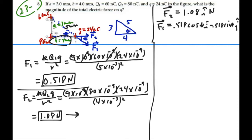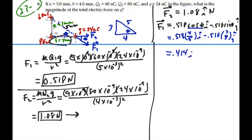The theta we're looking for is right there. So this is going to be 0.518 — cosθ will be 4/5 (adjacent over hypotenuse) — and 0.518·sinθ is going to be 3/5 ĵ. Calculating that out: 0.518 times 4/5 is 0.414, so we have 0.414î. And 0.518 times 0.6 (or 3/5) gives 0.311ĵ. So F1 equals (0.414î − 0.311ĵ) newtons.